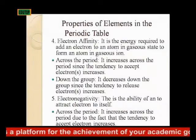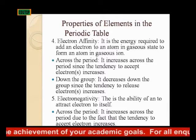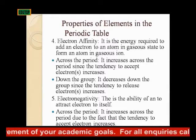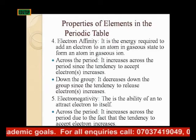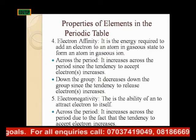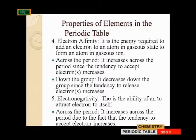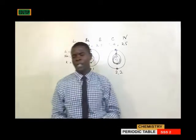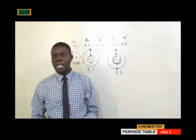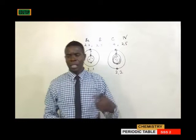Electronegativity is the fifth property of elements in the periodic table. It is the ability of an element to attract electrons to itself. Across the period it increases due to the fact that the tendency to accept electrons increases, just as with electron affinity. Down the group it decreases due to the fact that the tendency to release electrons increases — the same reason as electron affinity.